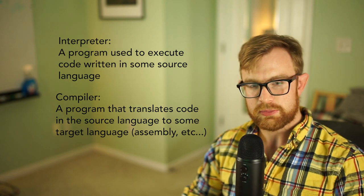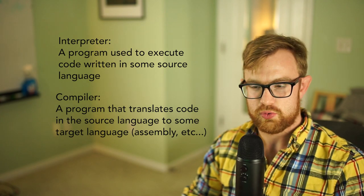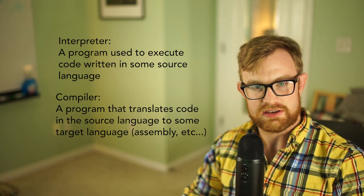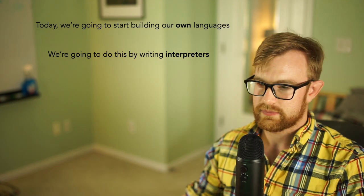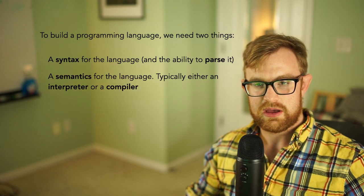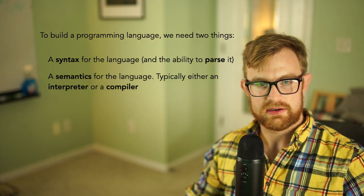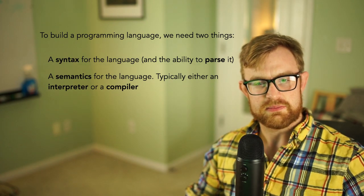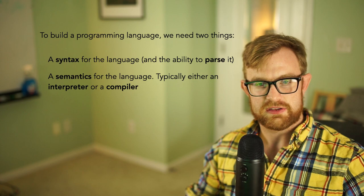For example, C++ is frequently compiled to binary code to run on AMD or Intel type processors in x86 assembly language. To build a programming language, we need two things: a syntax for the language that specifies what the language looks like, and also a semantics that actually gives meaning to the language. That's the main thing we're going to be focusing on in the course.